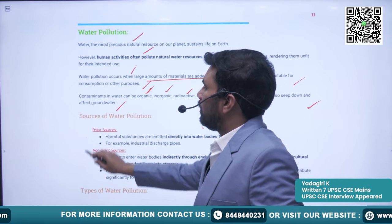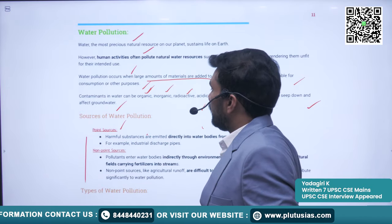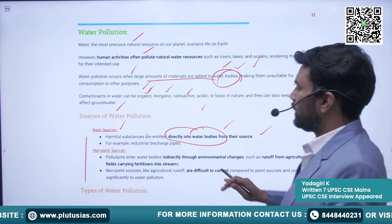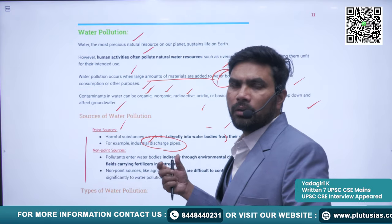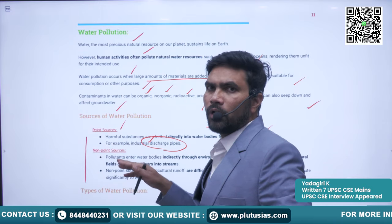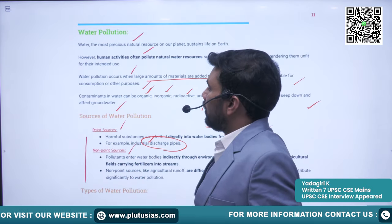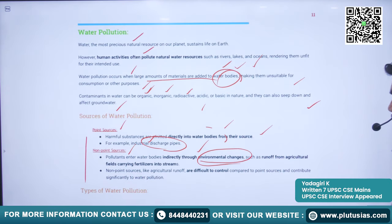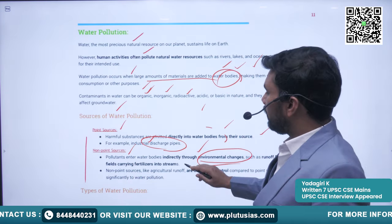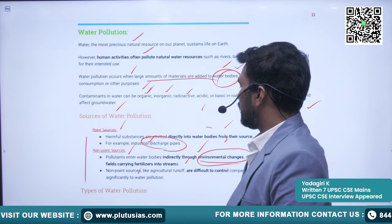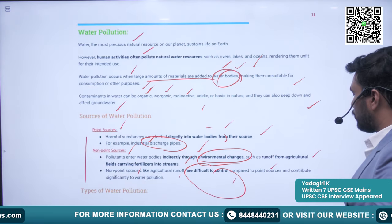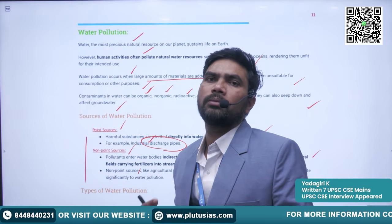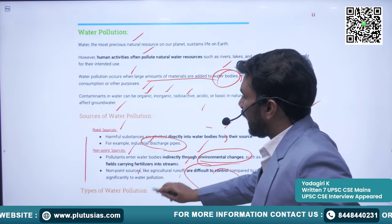Sources of water pollution are classified into two categories: point sources — where substances are emitted directly into water bodies from their source, such as industrial discharge pipes releasing waste directly into water bodies — and non-point sources, where pollutants enter water bodies indirectly through environmental changes such as agricultural runoff carrying fertilizers into streams. Non-point sources are difficult to control compared to point sources.